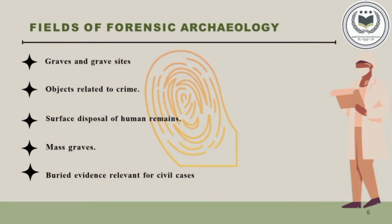There are various fields of forensic archaeology. Graves and grave sites: forensic archaeologists are often employed by the police to help locate and excavate graves and grave sites, as well as identify evidence related to crime and reconstruct the course of events that took place before the victim's burial. Objects related to crime: these can include both personal objects of a victim and objects buried by the perpetrator to hide their involvement. They may involve weapons, tools, various personal objects, etc.